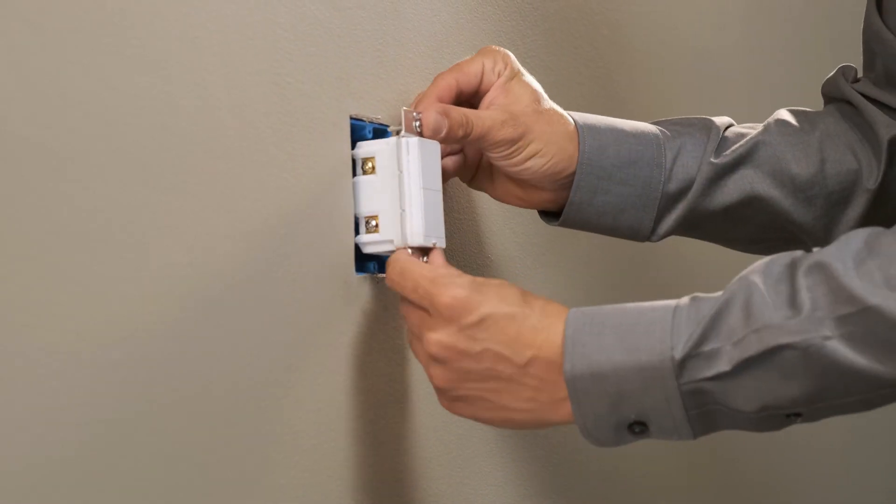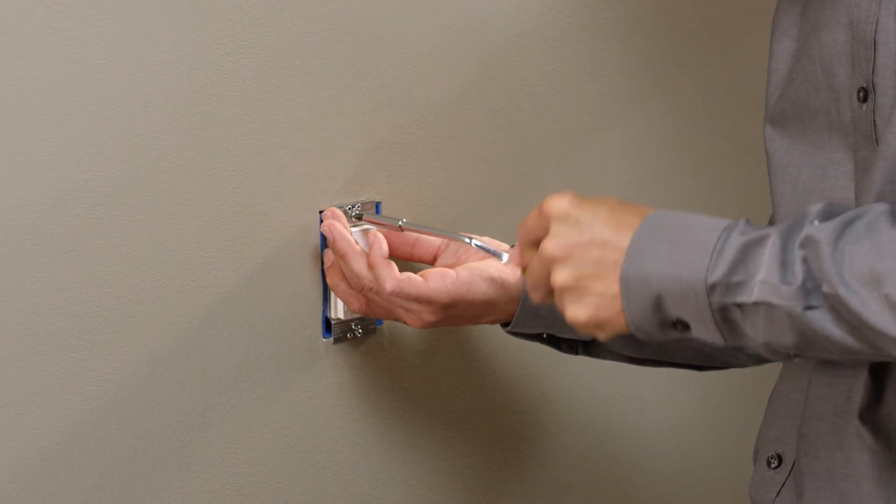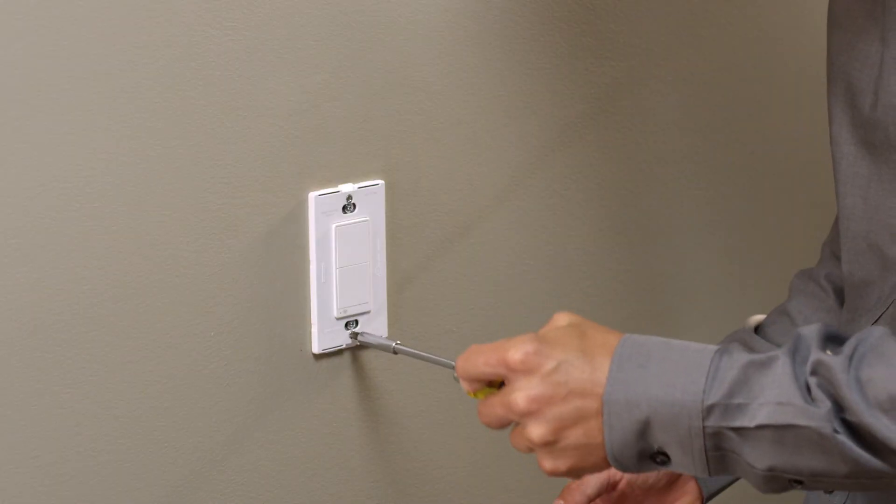After checking the connections, push the wire bundle neatly back into the wall box. Now, secure the device to the wall using the screws provided.